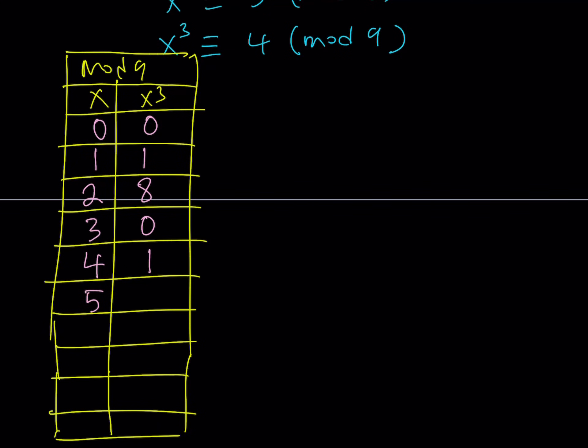5 is going to be, when 5 cubed, 125. I think 125 is, let's see, gives us a remainder of 8. Because, 1 plus 2 plus 5 is the remainder. And, then, for 6, obviously, it's going to give us a 0.